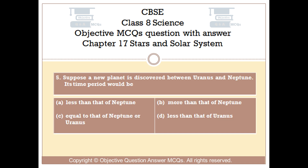Question number 5. Suppose a new planet is discovered between Uranus and Neptune. Its time period would be: Option A: less than that of Neptune. Option B: more than that of Neptune. Option C: equal to that of Neptune or Uranus. Option D: less than that of Uranus.